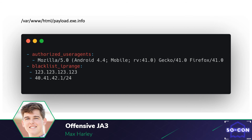In this example, we found that the target was using a user agent that ties back to an Android phone, and we're sending them a payload for Android. We also found that their internal mail filter is on IP address 123.123.123.123, so we can blacklist that IP from accessing the payload. We also found that their internet mail filter is running on the subnet 40.41.42.1/24. This way, we can ensure that our payload is only being accessed by the user we're trying to target and not the mail filters we want to block.